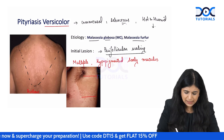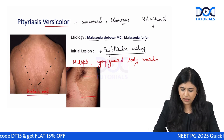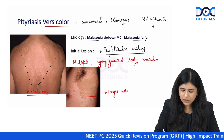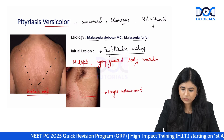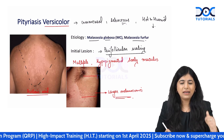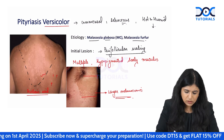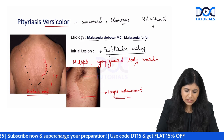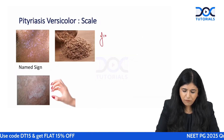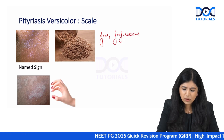Hypopigmentation occurs because the fungus produces azelaic acid, which reduces melanin production. Hyperpigmentation occurs because the fungus can induce production of larger melanosomes, making the skin darker. The lesions are present discretely and can coalesce to form lesions with polycyclic margins. The scaling is typically a fine furfuraceous scaling.